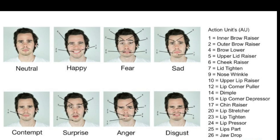Let's take a look at happy. When someone is happy, a few things happen. Number 6: the cheek raises. Number 25: the lips part. And number 12: the lip corner puller — the corner of the lip gets pulled. This is a universal microexpression, so if you're talking to someone on your team and you give them a task, if you see these three things happening, you can universally tell that they are happy about that task.